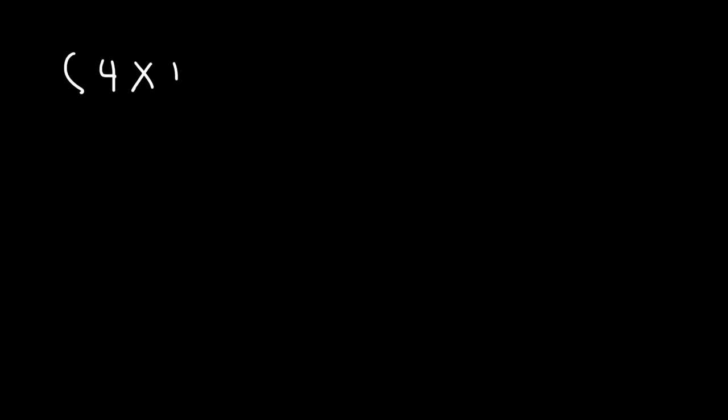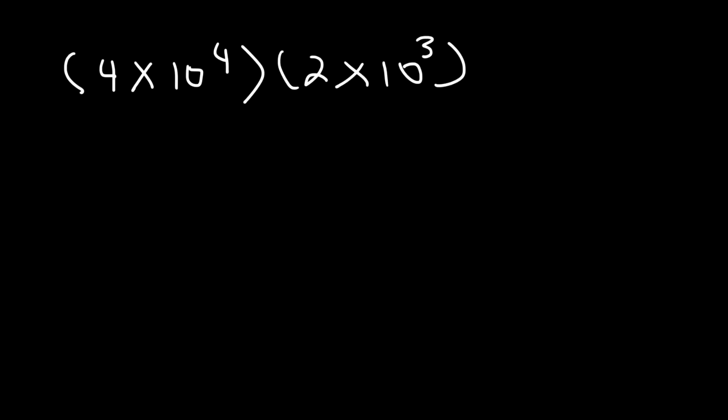In this lesson we're going to focus on multiplying two numbers in scientific notation. So let's start with this example. Let's say if we have 4 times 10 to the 4 and we wish to multiply by 2 times 10 to the 3. How can we do this?